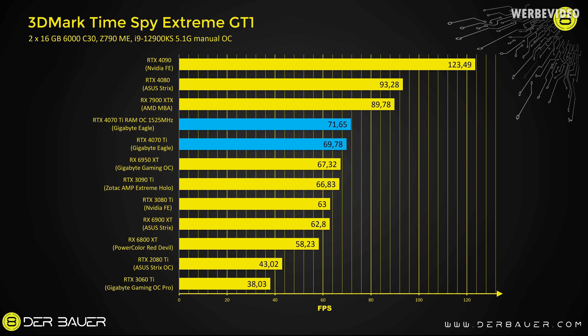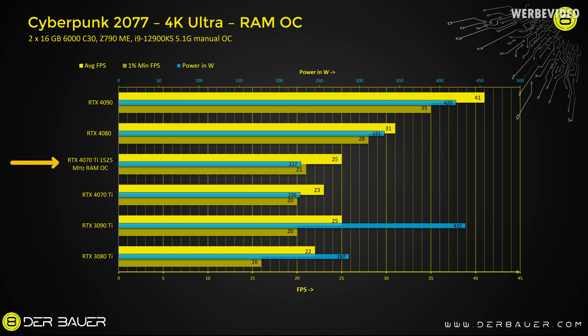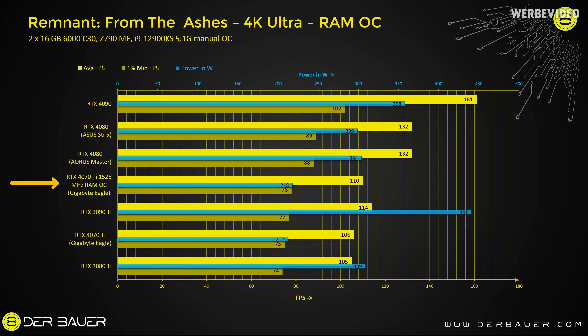Given the topic of the smaller 192-bit bus width, you might wonder if memory overclocking could help the 4070 Ti's 4K performance. In TimeSpy Extreme, overclocking from 1300 to 1525 MHz only yielded a 2.6% increase. In Cyberpunk, in theory you could see a 5-10% increase, but the FPS are so low that an increase from 20 to 21 FPS could just be measurement tolerance. In Remnant from the Ashes, memory overclocking also only showed a 4% increase. So I would not consider memory overclocking a meaningful way to compensate for the smaller bus width.